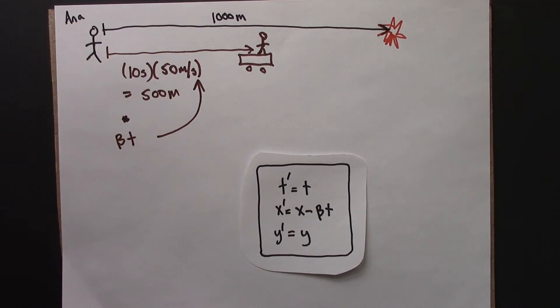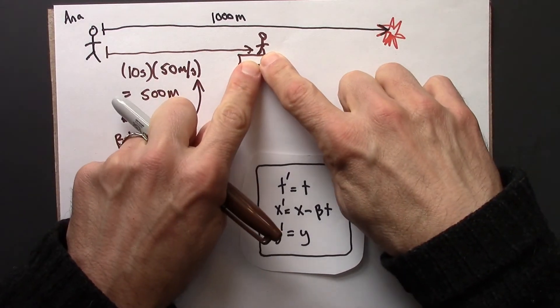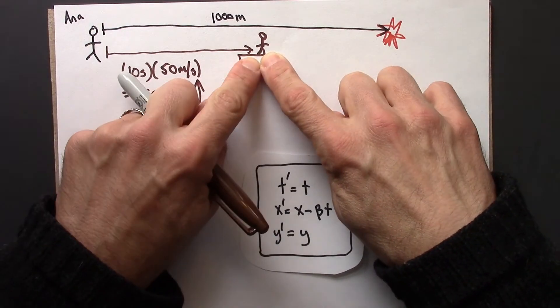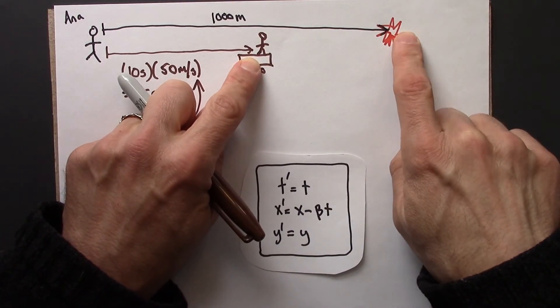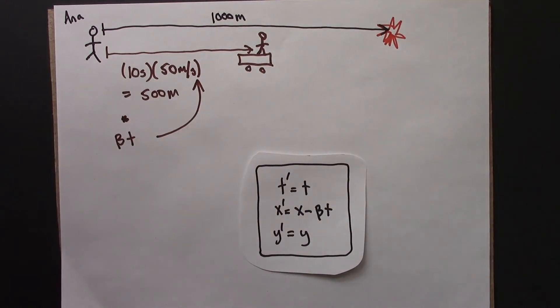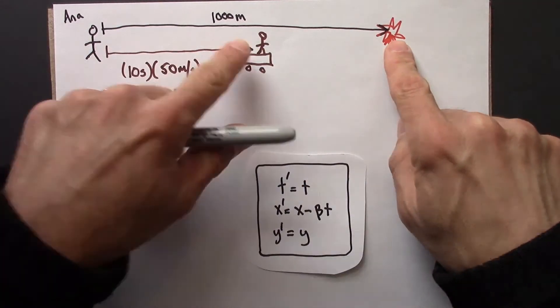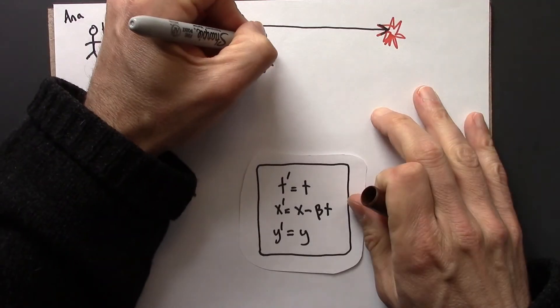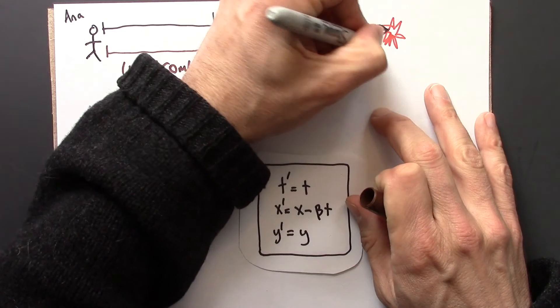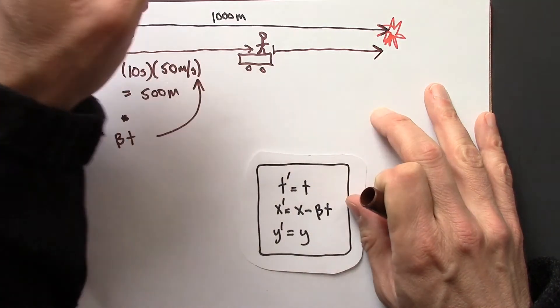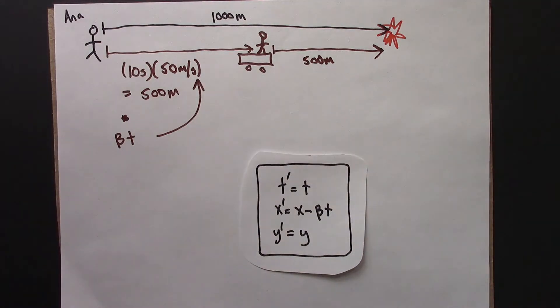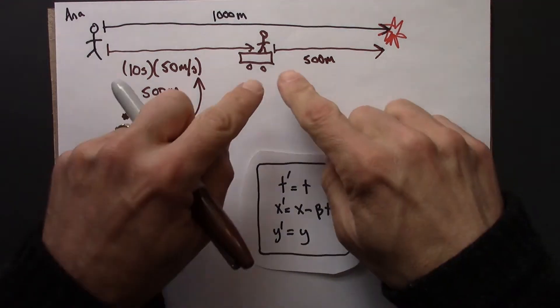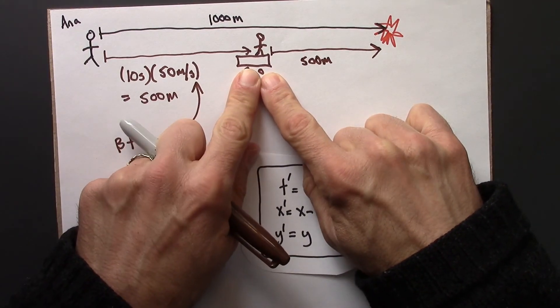So, then, Beowulf is here. Anna is there. Beowulf is going to look over here and say, okay, relative to me, what's the location of this event? And, well, if this is 500, then this also has to be 500. So, Beowulf says, the firecracker explodes 500 meters from me. Anna says, the firecracker explodes 1,000 meters from me.